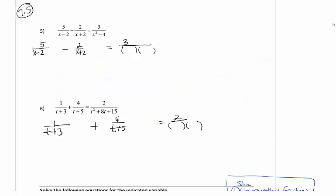We're going to go back to 7.5 lecture notes, and we're starting off with number 5, which is 5 over x minus 2, minus 2 over x plus 2, equals 3 over x squared minus 4.